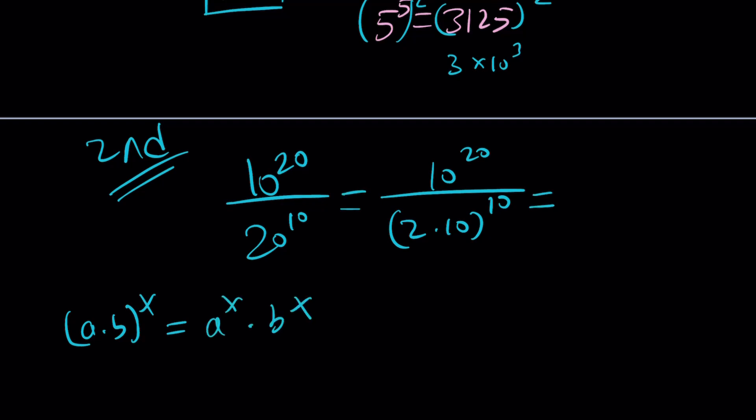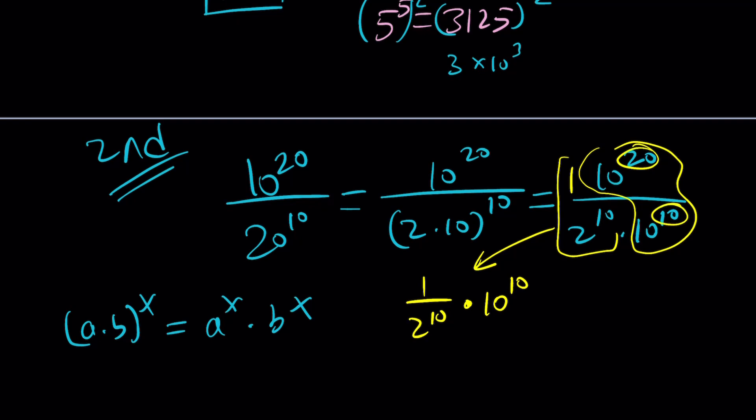So I can go ahead and write this as 10 to the power 20 divided by 2 to the 10 times 10 to the 10. And now I can go ahead and bundle these two together. And division means we're going to subtract the exponents. But there is nothing else here. So let's put a 1 there and take care of this first. So we have 1 over 2 to the 10th multiplied by 10 to the power 10. Because, again, the exponents are being subtracted, right?